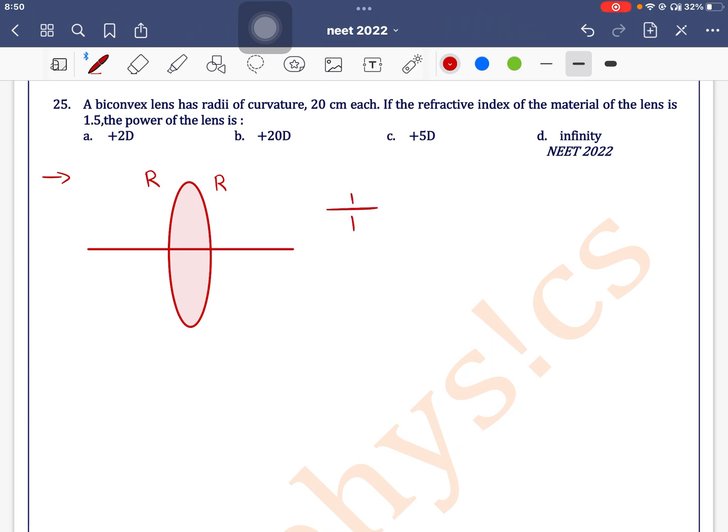We know that the formula for focal length, or in terms of power, is written as that is mu 2 by mu 1 minus 1 into 1 by r1 minus 1 by r2.